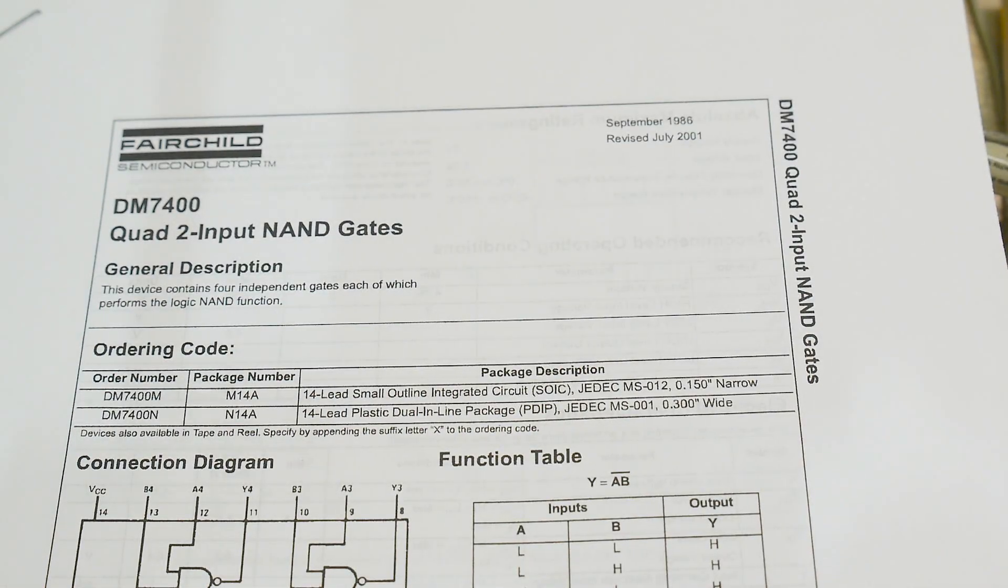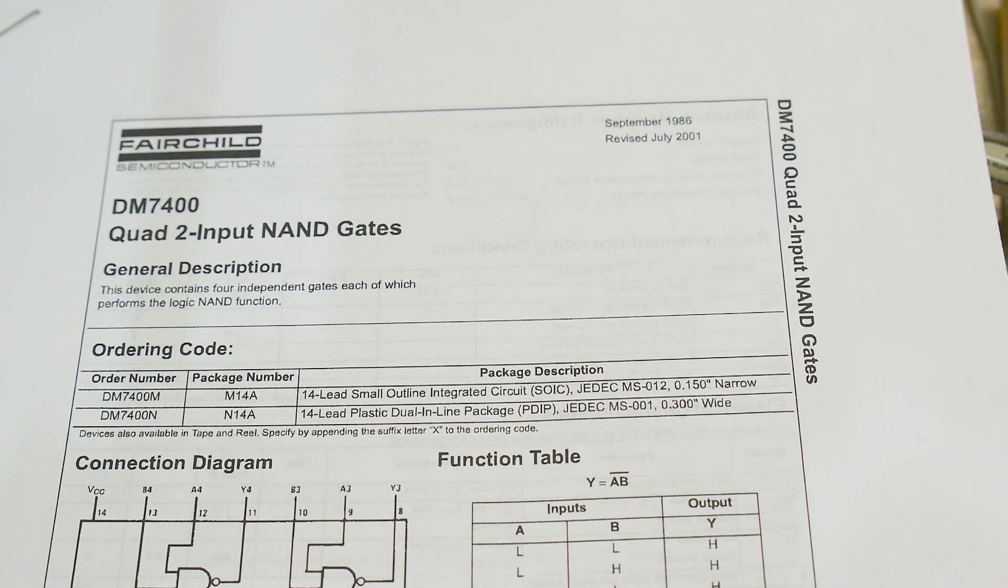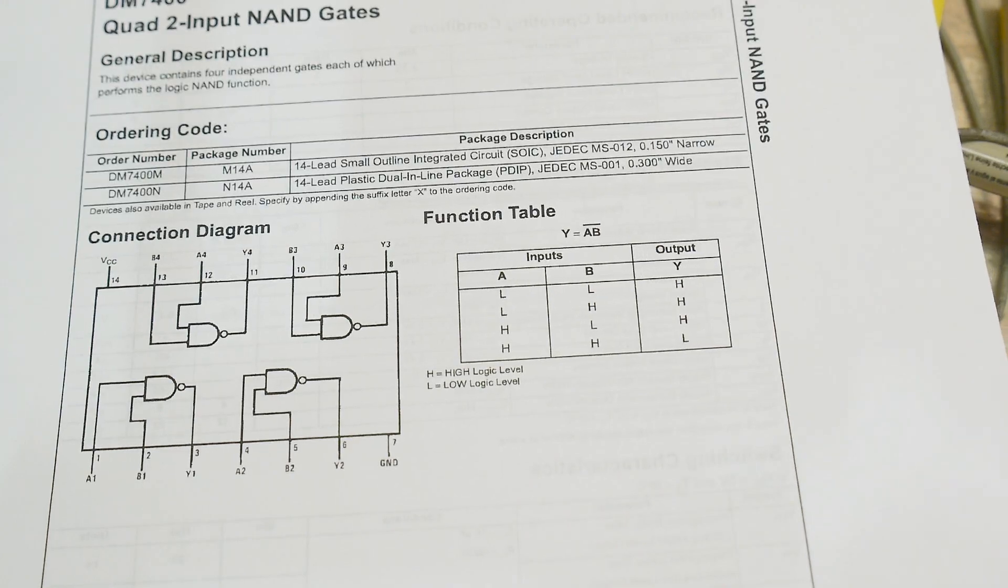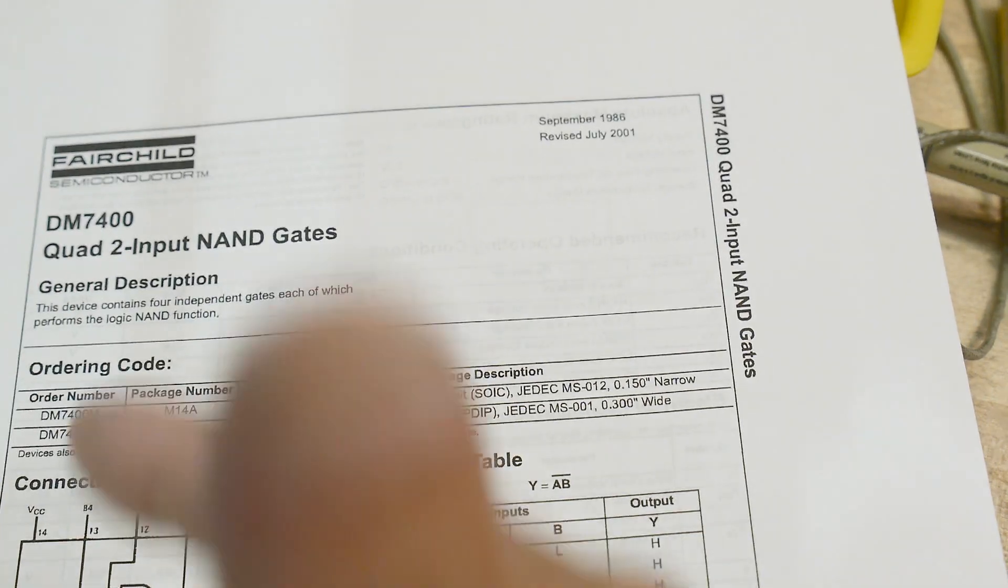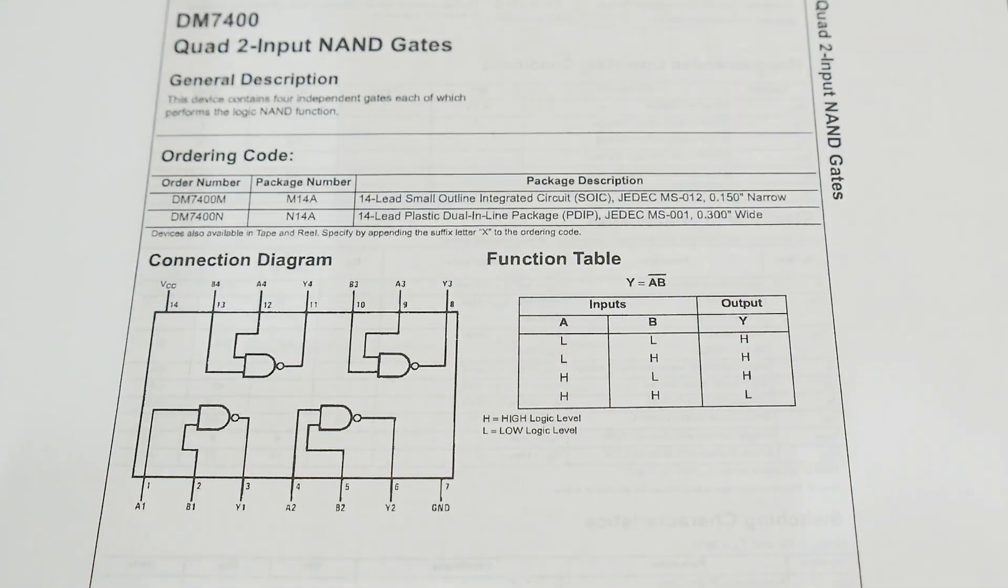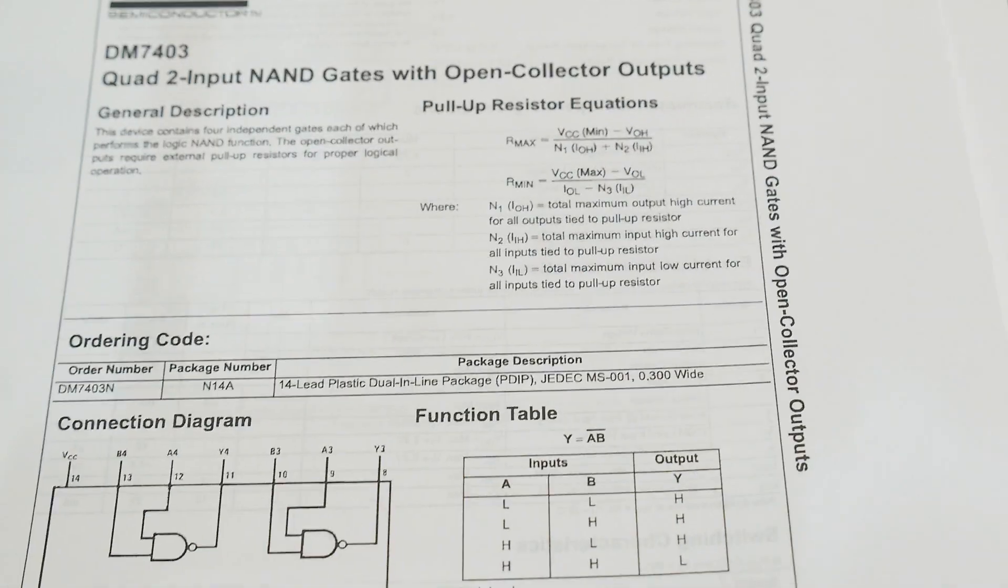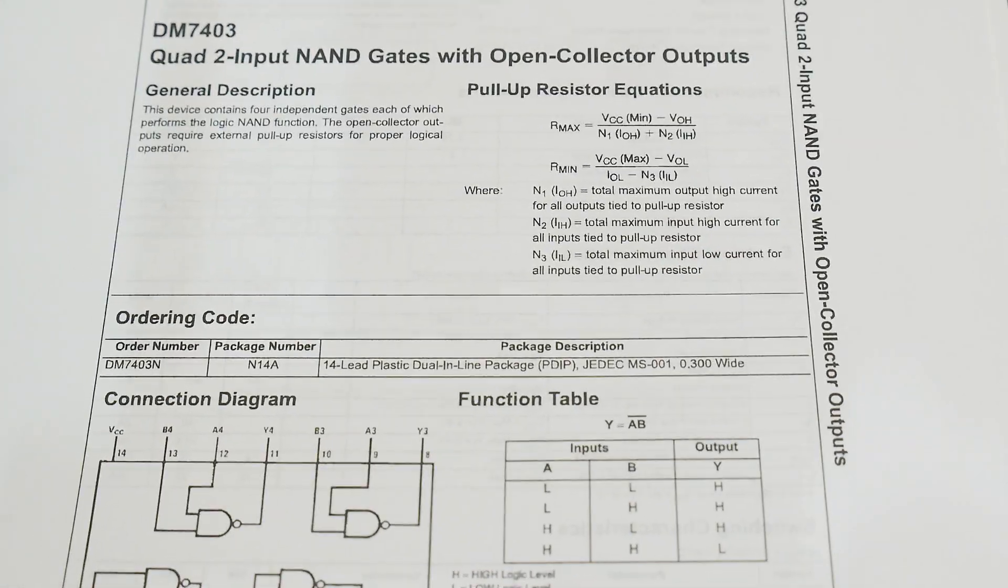Alright, chip of the day. This is a good one. Today we're going to be taking a look at a quad NAND gate, and no, it's not the 7400. The 7400 was the very first one, a NAND gate with a low true output. We're going to be talking about the third or fourth part they ever built.